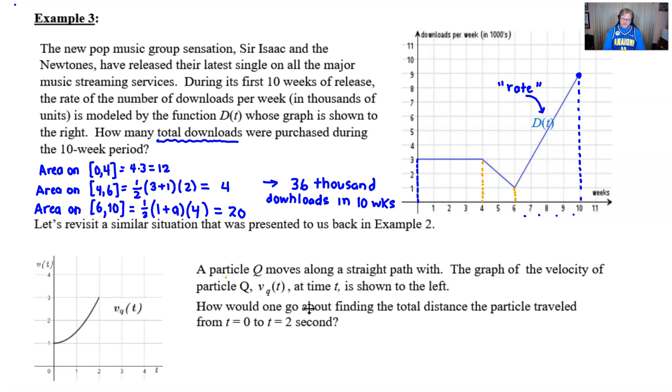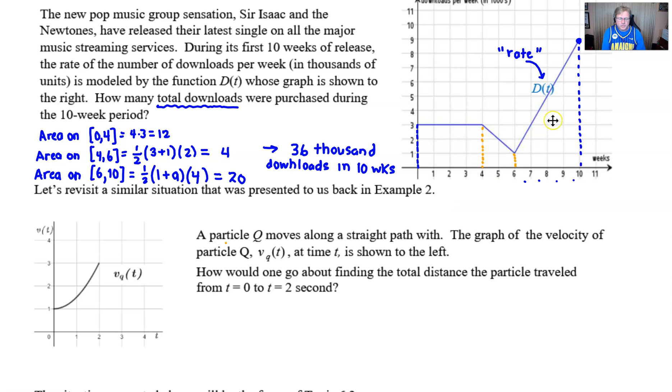But what if we revisit a situation similar to our example two? Particle Q, this time we have our good friend particle Q. Particle Q moves along a straight path. The graph of the velocity of particle Q at time T is shown to the left. As you can see, we don't have that constant velocity. This is a velocity that seems like it's increasing just ever so slightly over those two second period of time. How would one go about finding the total distance this particle traveled from time zero to time two seconds?